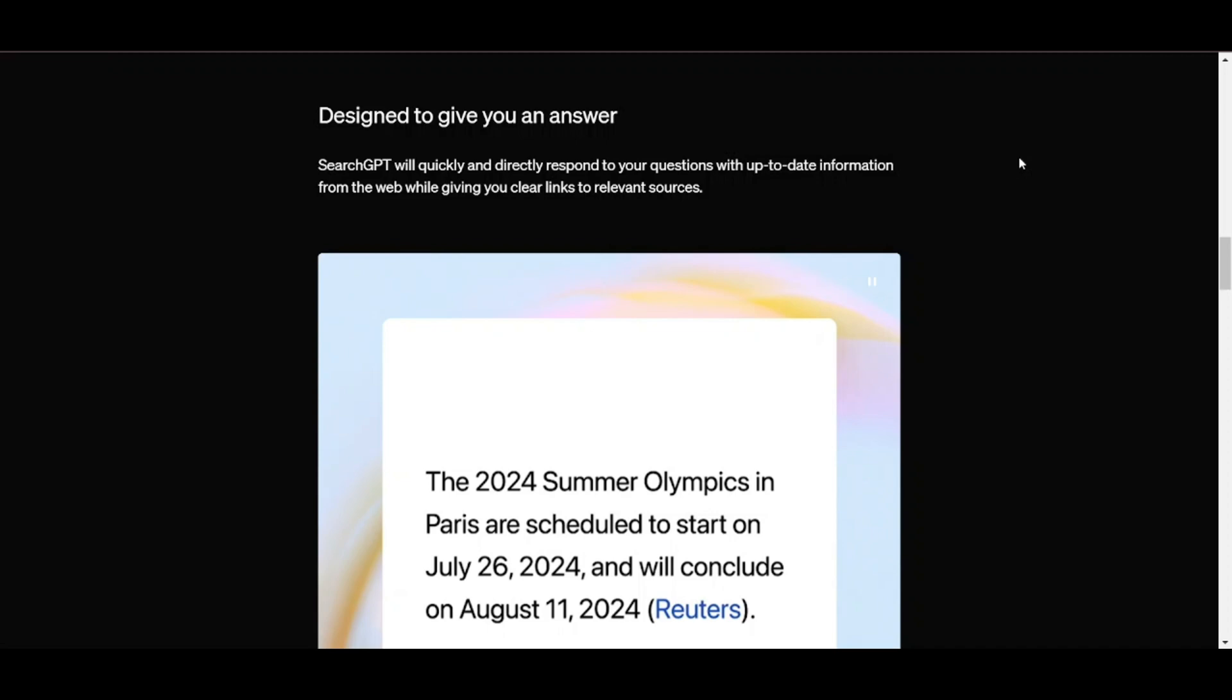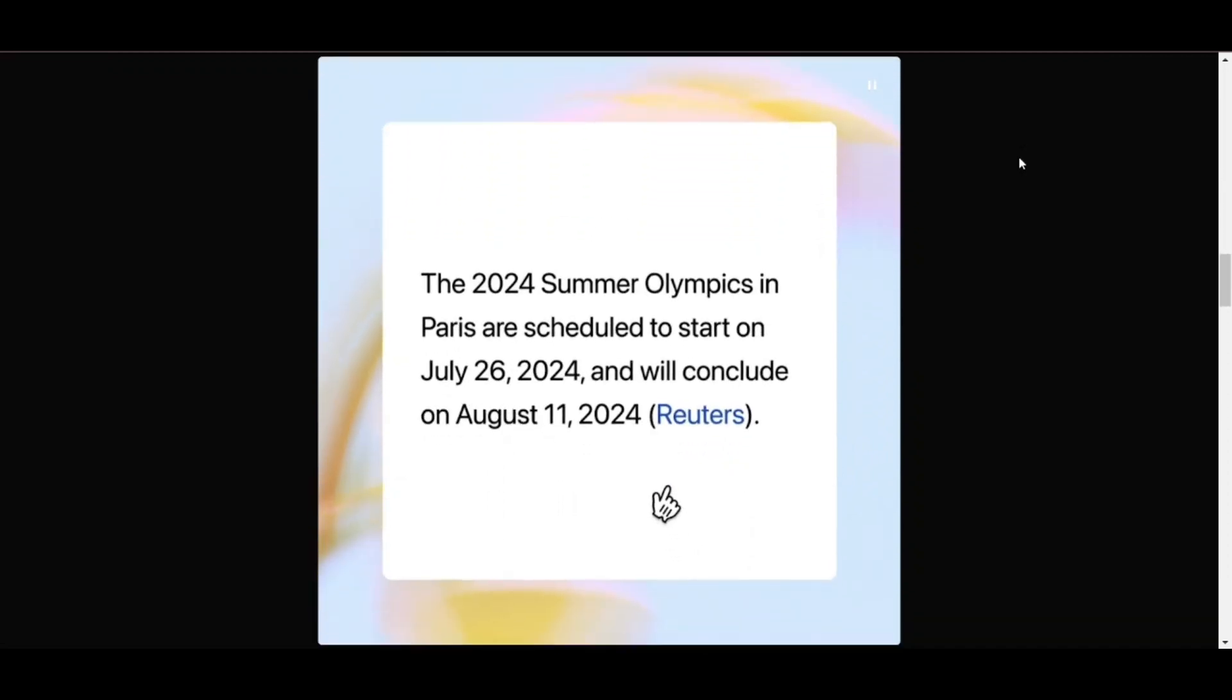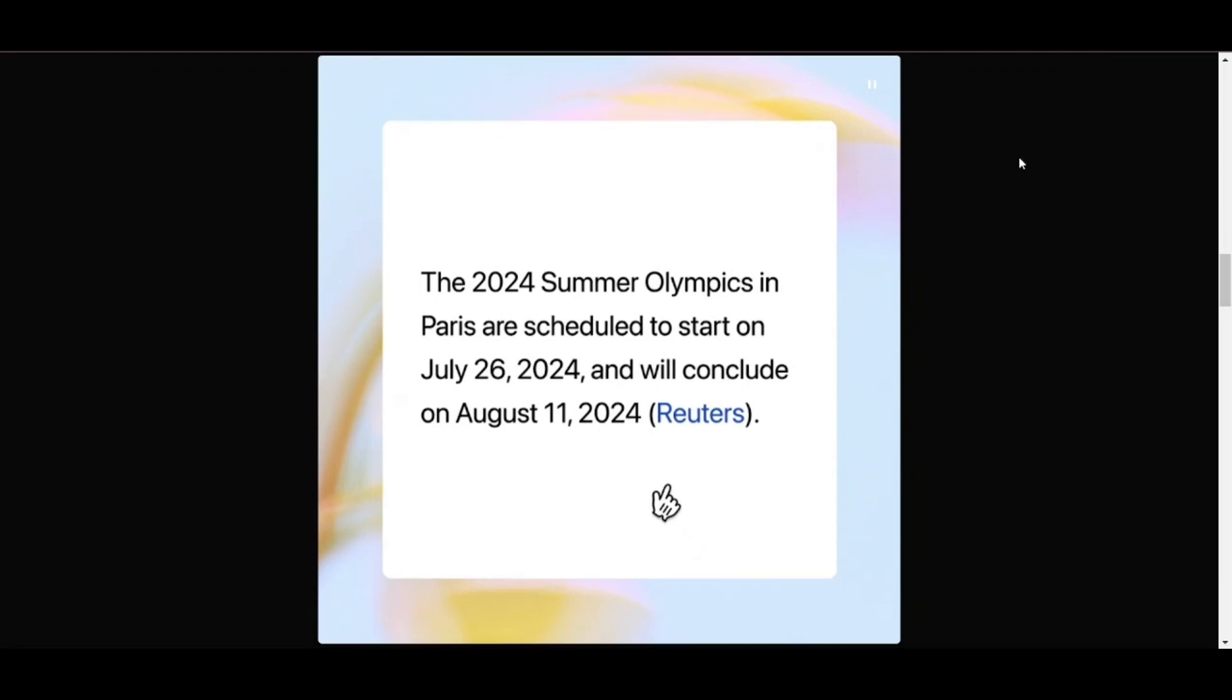SearchGPT is designed to help users connect with publishers by prominently citing and linking to them in searches. Responses have clear, inline, named attribution and links so users know where information is coming from and can quickly engage with even more results in a sidebar with source links.